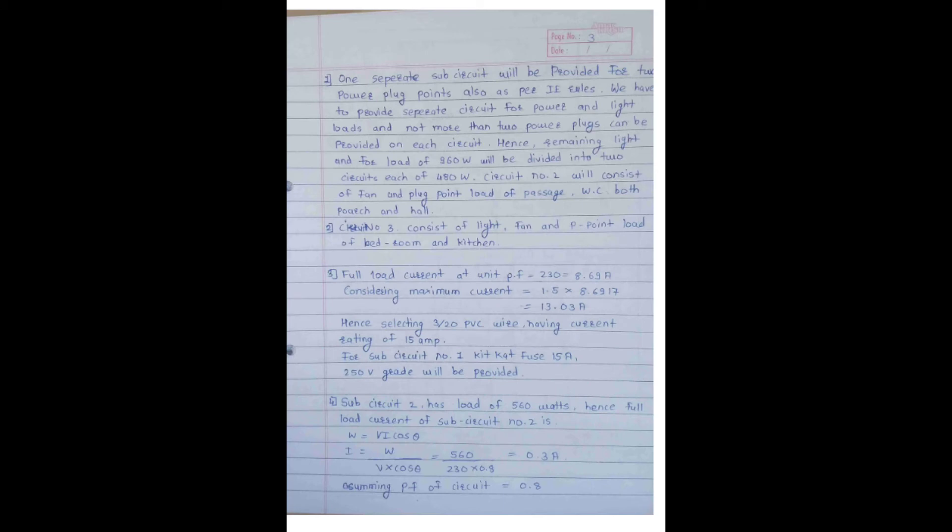Total load of building: light point is equal to 60 watt, and there are total nine light points, so 60 times 9 equals 540 watt. Total fan points are 180 watt, plug points are 240 watt, and power points are 2000 watt. So the total wattage is 2,960 watt.